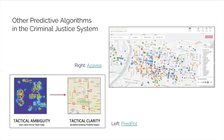The Chicago Police Department ran one of the biggest person-based predictive policing programs in the U.S. by using algorithms to create a list of people most likely to commit gun violence or be a victim of it. However, their model was ineffective, targeted communities of color, and relied on arrest records too much, and was phased out in January 2020.